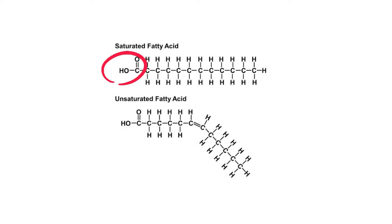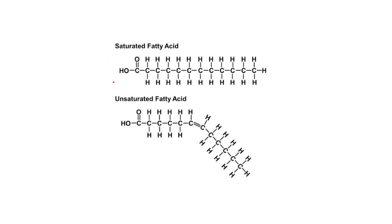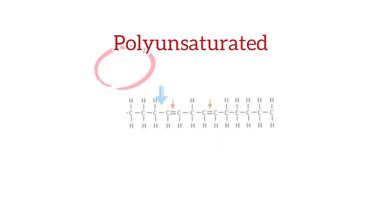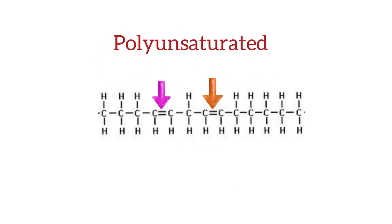Fatty acids have long polymers of carbon, which are divided into two categories: saturated and unsaturated. Unsaturated fatty acids include monounsaturated, which means they contain one double bond, and polyunsaturated fatty acids, which means they have multiple double bonds.